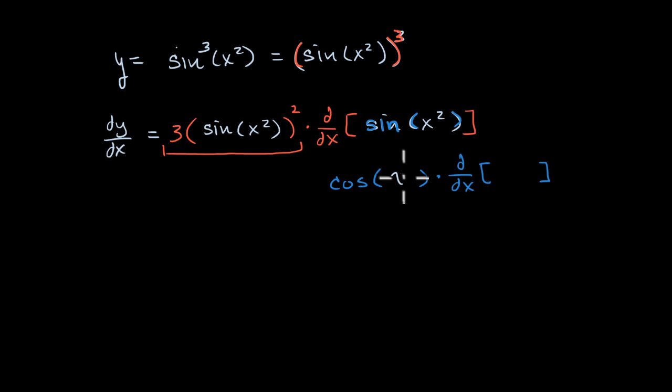And in this case, the something is our x squared. And of course, we have all of this out front, which is the three times sine of x squared squared.